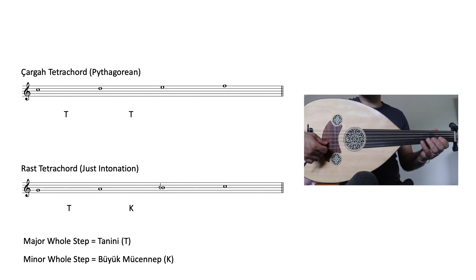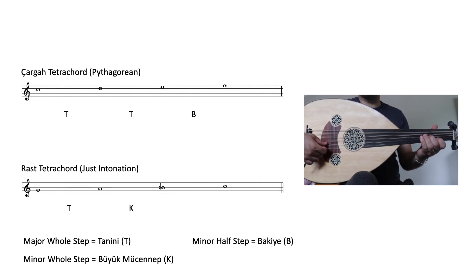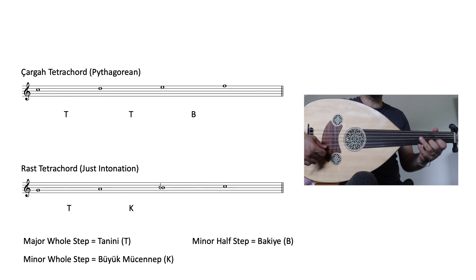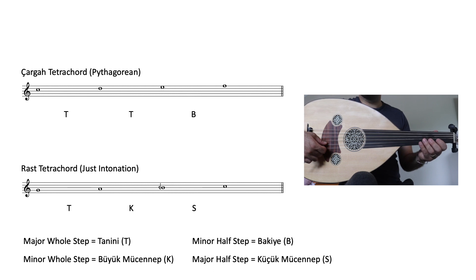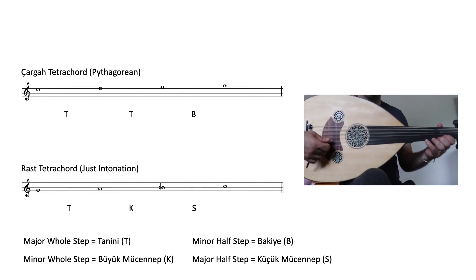And if there are major and minor whole steps, there are also major and minor half steps. In the chargah tetrachord, we have a minor half step, or bakiye, between the third and the fourth degrees. And in the rast tetrachord, we have the major half step, or küçükmücennep, between the third and fourth degrees. The difference between the major whole step and minor whole step is exactly one comma.